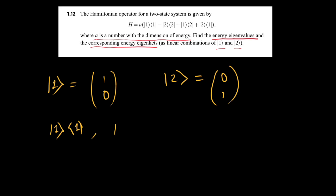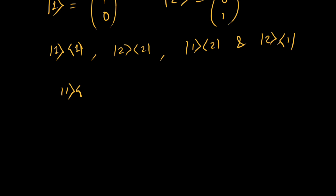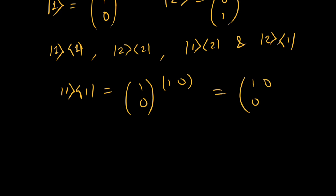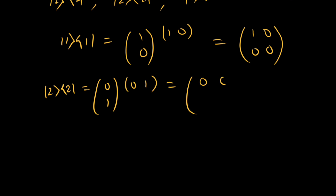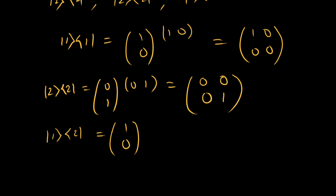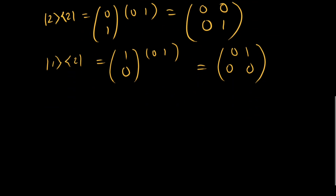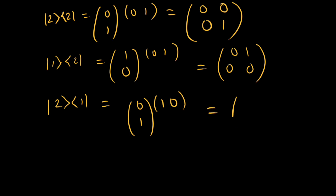We need to calculate |1⟩⟨1|, |2⟩⟨2|, |1⟩⟨2|, and |2⟩⟨1|. So |1⟩⟨1| = [[1,0],[0,0]], |2⟩⟨2| = [[0,0],[0,1]], |1⟩⟨2| = [[0,1],[0,0]], and |2⟩⟨1| = [[0,0],[1,0]].